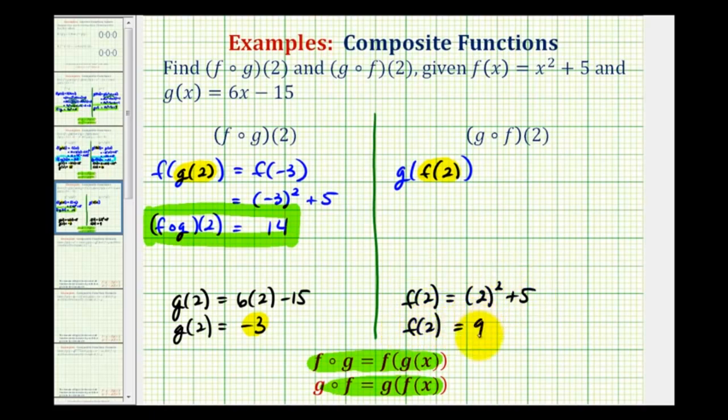So now we can substitute 9 for f of 2. So our composite function value is going to be equal to g of 9. And now, since g is equal to 6x minus 15, g of 9 will be equal to 6 times 9 minus 15.